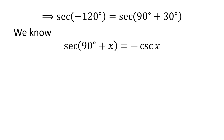As we know, the trigonometry identity secant of 90 degrees plus x is equal to minus cosecant of x. The video explaining how to derive this identity is appearing in the upper right corner, and the URL address of the video has been mentioned in the description section.